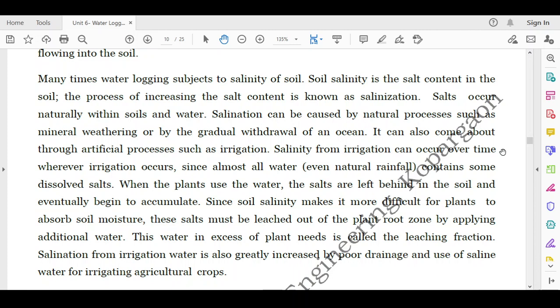It can also come about through artificial processes such as irrigation. Salinity from irrigation can occur over time whenever irrigation occurs since almost all water, even natural rainfall, contains some dissolved salts. When the plants use this water, the salts are left behind in the soil and eventually begin to accumulate. Since soil salinity makes it more difficult for plants to absorb soil moisture, these salts must be leached out of the plant root zone by applying additional water. This water in excess of plant need is called the leaching fraction.